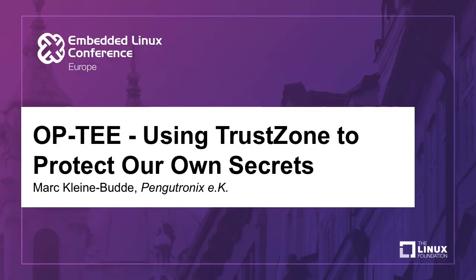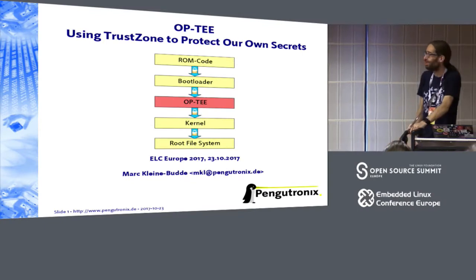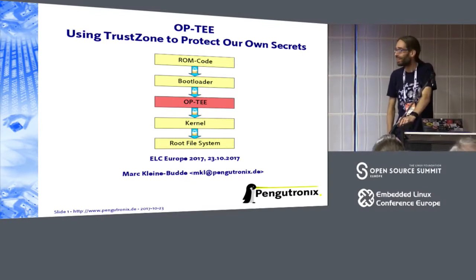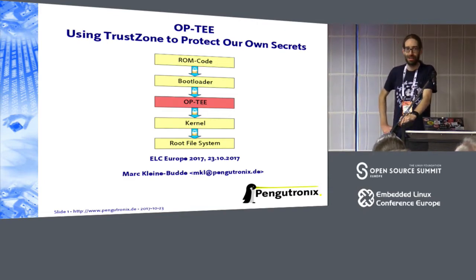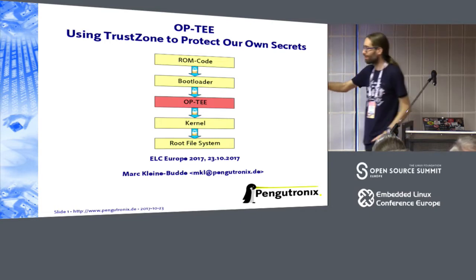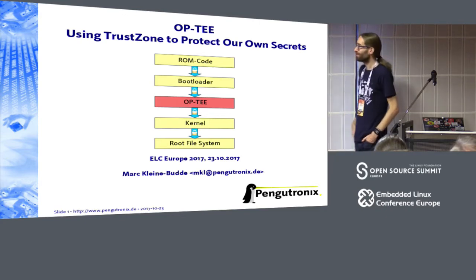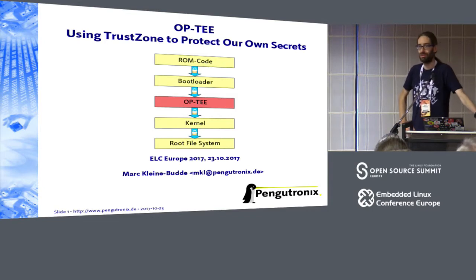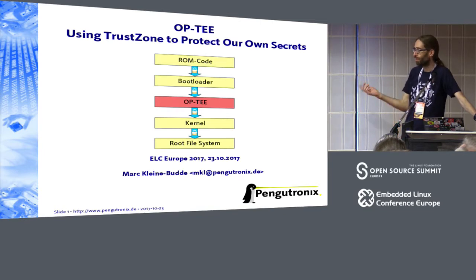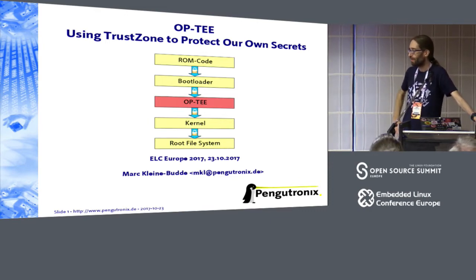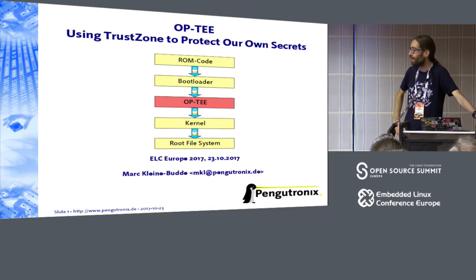I hope you already had your talking. Although I'm talking about TEE today, but not that kind of beverage. This is my opening slide from the talk I gave last year in Berlin. It was about trusted boot on an IMX6, covering the over-ROM bootloader, kernel, and root file system to protect your system against offline attacks. This year, we added an option in the middle, and that is what this talk is about.